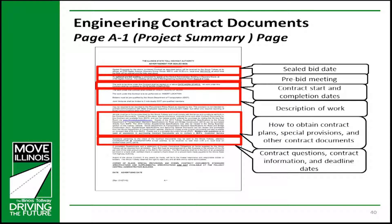The Contract Requirements Book Page A-1 outlines important contract information. This includes the sealed bid date, pre-bid meeting, contract start and completion dates, description of work, how to obtain contract plans, special provisions and other contract documents, contract questions, contract information, and deadline dates.